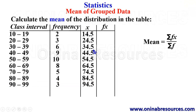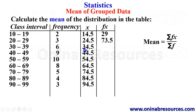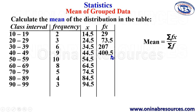Now that we have the values for the column of X, we go for FX. For FX, we are going to multiply the frequency by the mid-value. So 2 times 14.5 gives 29. 3 times 24.5 gives 73.5. 6 times 34.5 gives 207. 9 times 44.5 gives 400.5.